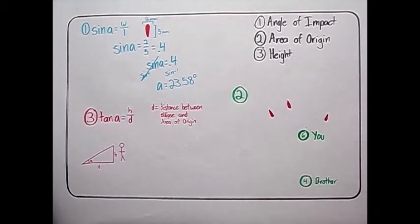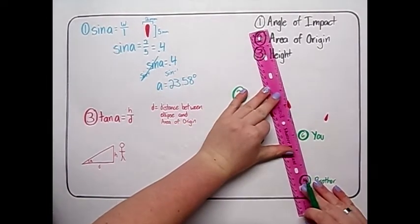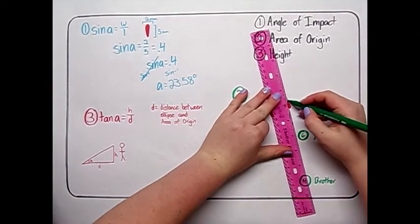Second, to find the area of origin, we will use three of the ellipses created by the cranberry sauce. Each ellipse has something called a tail. It's that thin, almost arrow-looking part. That arrow points in the direction that the ellipse was headed towards.